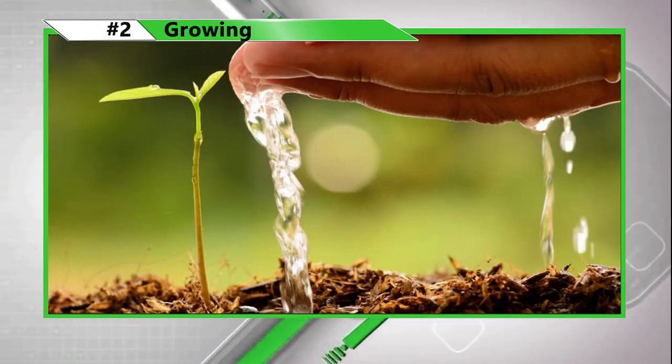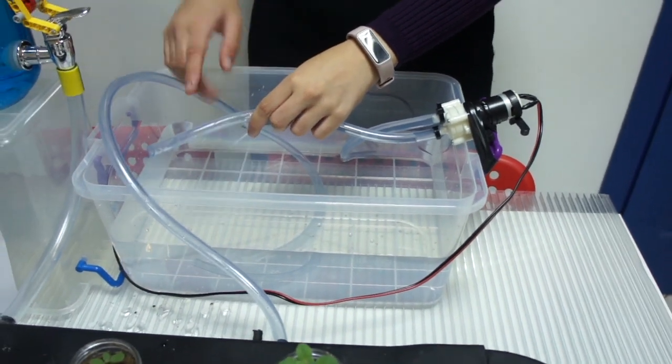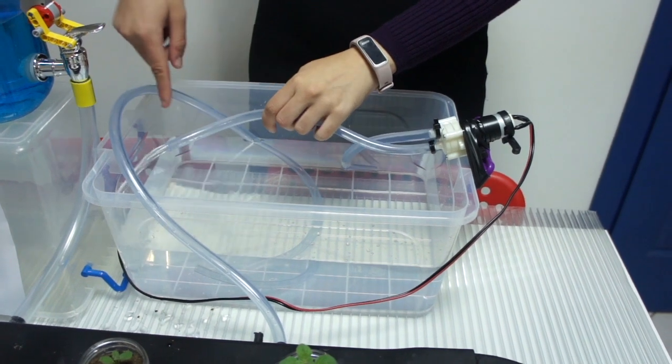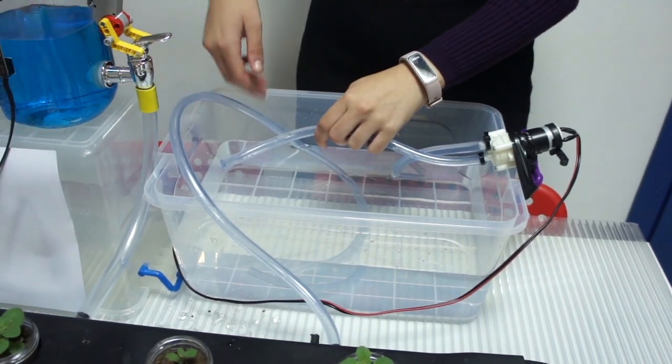The second phase concerns the growing procedure of the plants. The plants are watered and fertilized according to the temperature and the humidity of the environment.